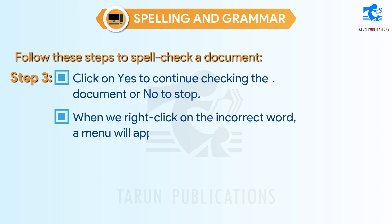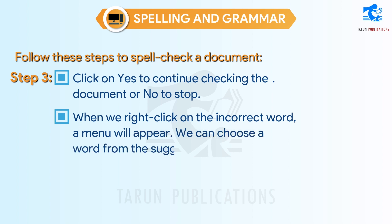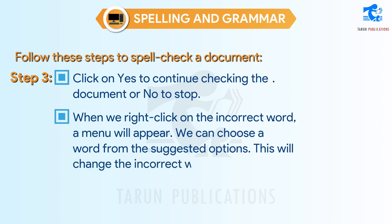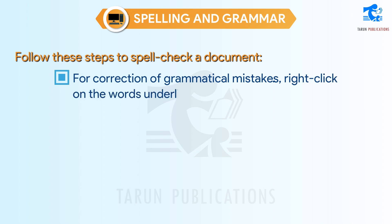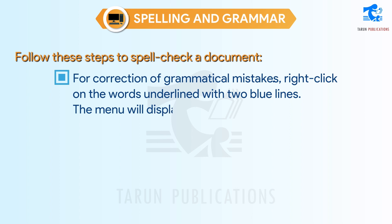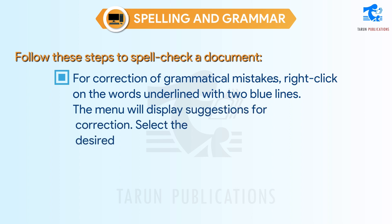When we right-click on the incorrect word, a menu will appear. We can choose a word from the suggested options, which will change the incorrect word. For correction of grammatical mistakes, right-click on the words underlined with two blue lines. The menu will display suggestions for correction. Select the desired option.